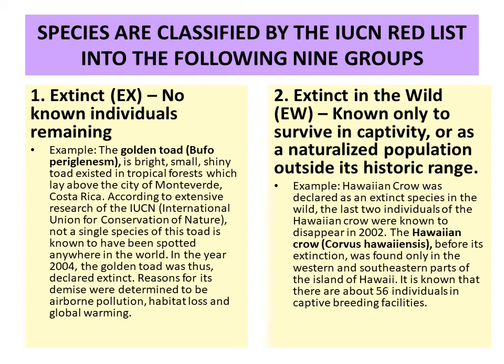The second category is extinct in wild, meaning present in captivity but not in the wild — known only to survive in captivity or as a naturalized population outside its historical range. An example is the Hawaiian crow: only two individuals were present and they disappeared in 2002, but 56 individuals are present in captive breeding facilities.